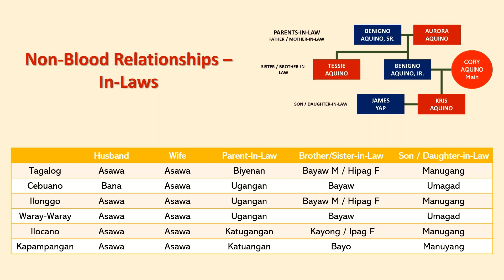For brother or sister-in-law, it is Bayaw for brother-in-law in Tagalog and Hipag for sister-in-law, while the term Bayaw is generic for both brother and sister-in-law in Cebuano. Bayaw and Hipag are used in Ilonggo, while in Waray-Waray the term Bayaw applies to both. In Ilocano, brother-in-law is Kayong and sister-in-law is Ipag, while Kapampangan has the generic term Bayaw for both. For son or daughter-in-law, the term is Manugang in Tagalog, Umagad in both Cebuano and Waray-Waray, Manugang for Ilonggo and Ilocano, and Manuyang for Kapampangan.